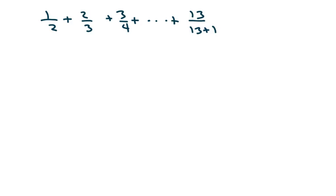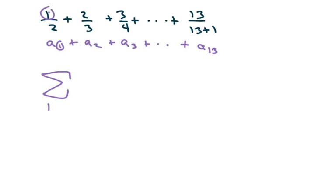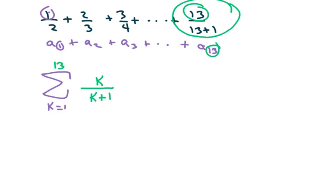We're getting into fractions. If you write this out, this is a(1) + a(2) + a(3) + ... + a(13), because the index matches up there. So we're starting with k equals 1, going to 13, and we're going to write k over k+1. A good hint when doing these is to look at that last term — it will help you a lot when finding your sums.